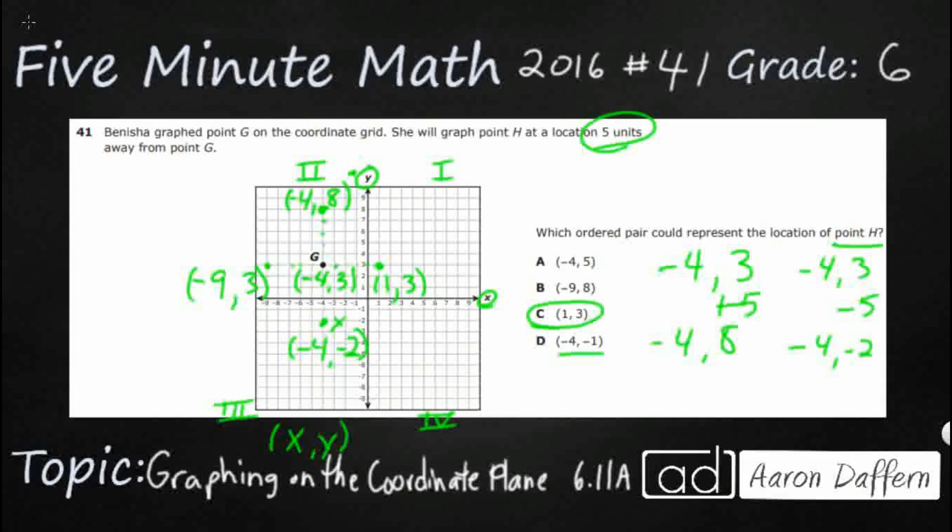We could have done the same thing over to our X coordinates, which eventually gave us our answer, right? We could have added 5, and that gave us 1, 3. That was our answer, or we could have taken away 5, that was negative 9, 3. The answer is C.